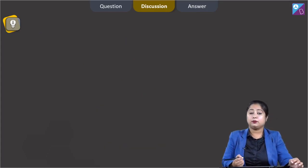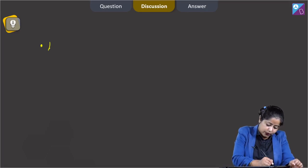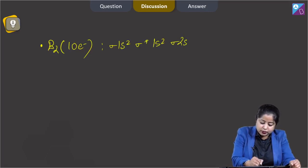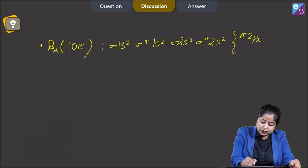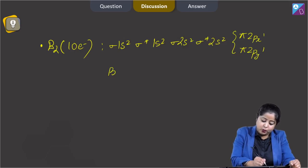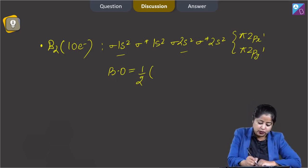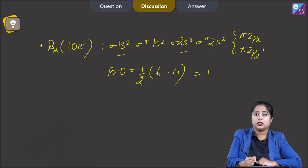For B2 with 10 electrons: σ1s², σ*1s², σ2s², σ*2s², π2px¹, π2py¹. Bond order = ½(bonding − antibonding) = ½(6 − 4) = 1.